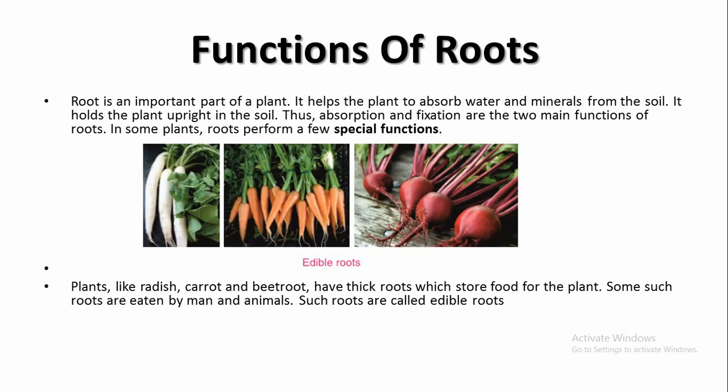In some plants, roots perform a few special functions. Plants like radish, carrot, and wheat have thick roots which store food for the plants. Some such roots are eaten by man and animals. Such roots are called edible roots — roots that are eaten by man and animals.